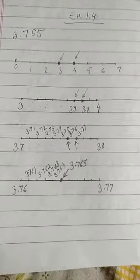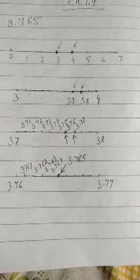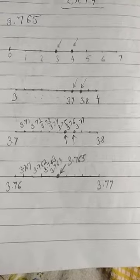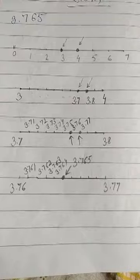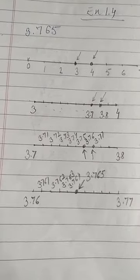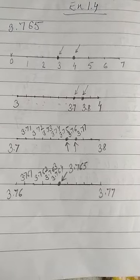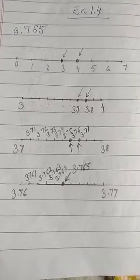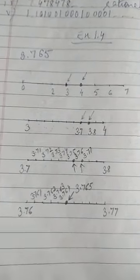Good morning students. Today we will discuss worksheet 1.4 of the first chapter, Number System. In this worksheet, the first question is to visualize 3.765 on the number line using successive magnification. Using successive magnification, you have to locate 3.765 on the number line.